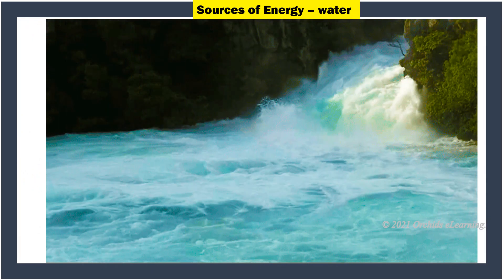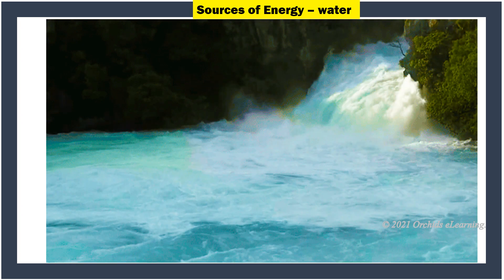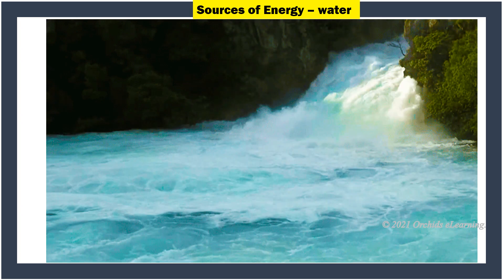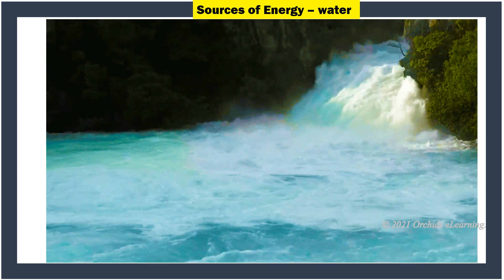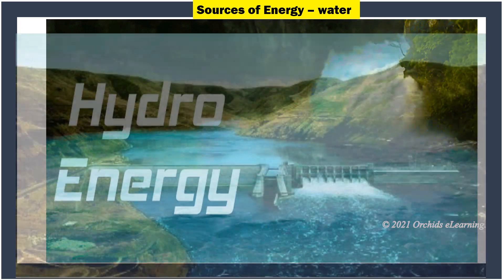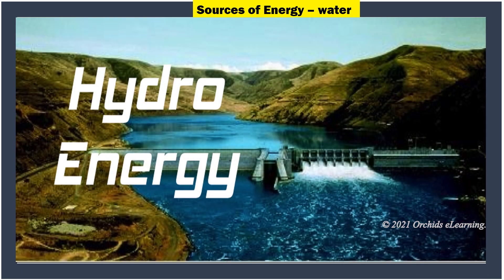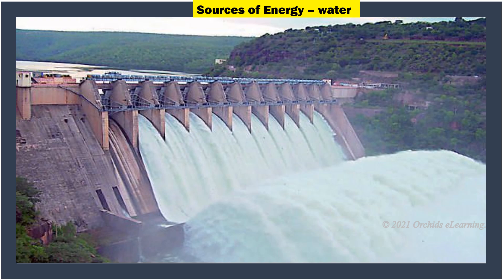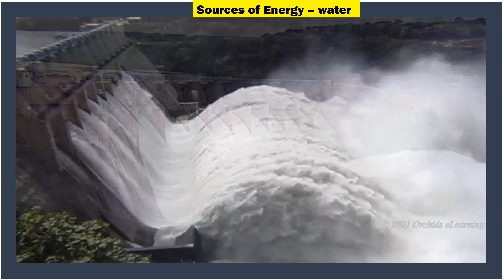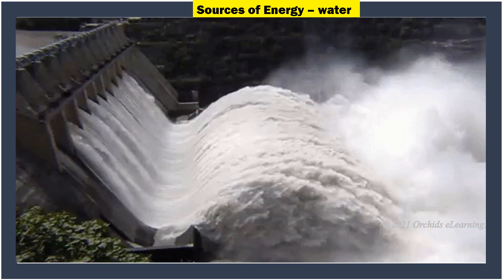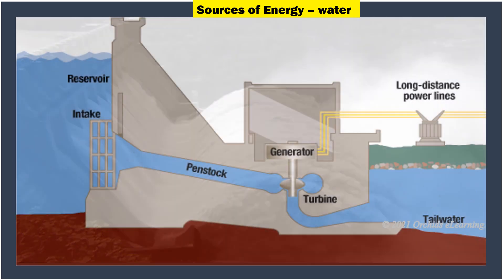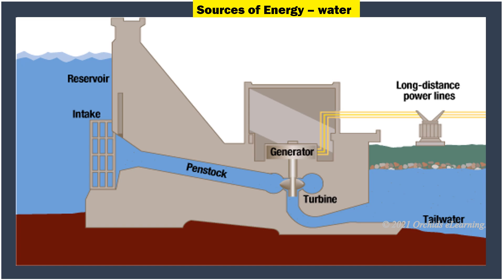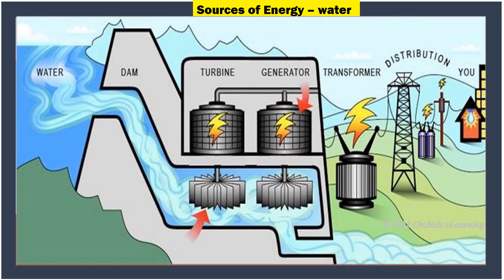Water: Moving water also has a lot of energy in it — this energy is called hydro energy. To use this energy, we build dams. Water is allowed to fall from a height onto turbines with great force. The turbines move and help to produce electrical energy.